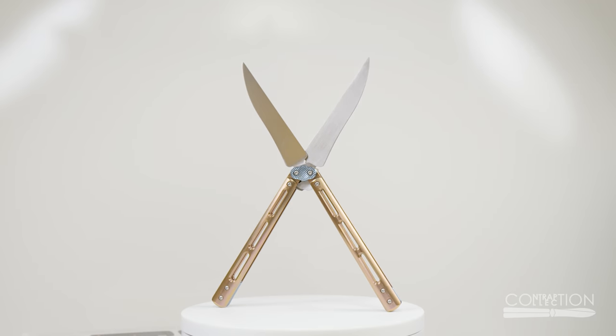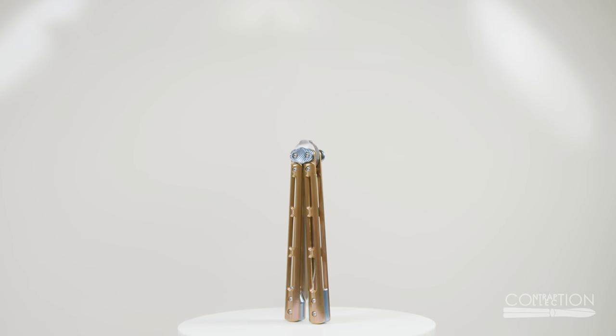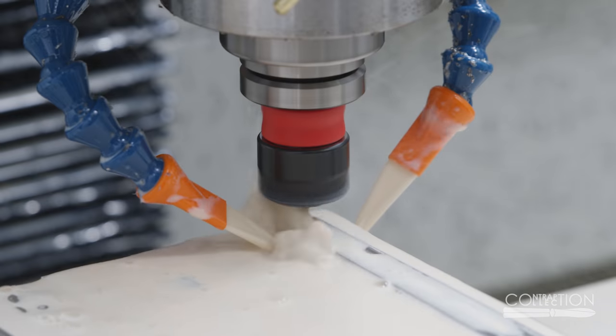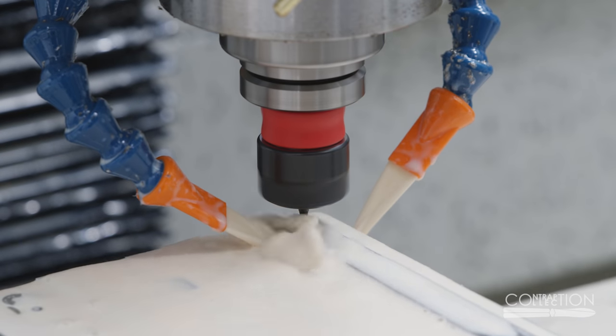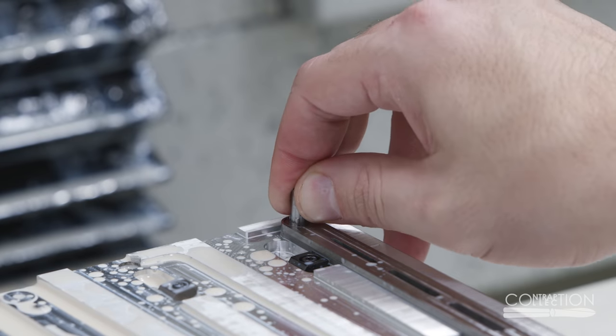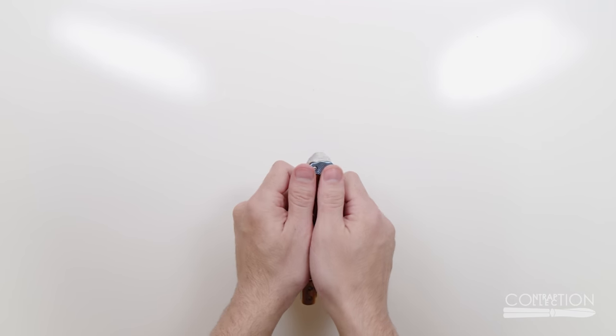Well, these balisong scissors didn't come out perfect, but I still think they're pretty nice. In the next episode, I'll try to make some scissors with the other design. I don't know if it'll work, but I think I've already learned from it. So like, comment, subscribe, and I'll see you next time.